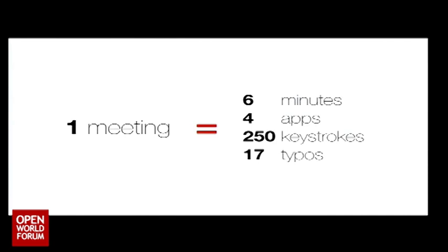Let me give you a simple example. To come here today, I basically took my calendar, opened it, looked up the address. Then I opened Google Maps to see where it was. Then I opened CityMapper to see how to get here by tube. I saw there were a couple of changes, so I wanted to take an Uber — so I opened Uber and typed in the data again. And because I also wanted to know who I'm going to meet with, I looked up the LinkedIn profiles of a few people speaking here. All in all, for one single meeting: six minutes, four apps, 200 keystrokes, and 17 typos.